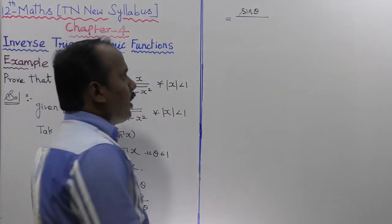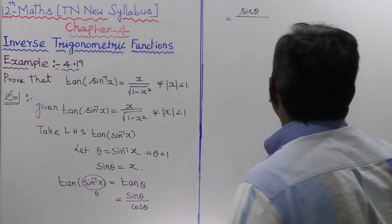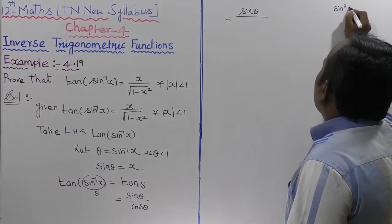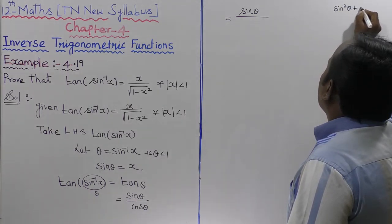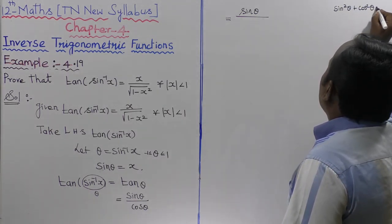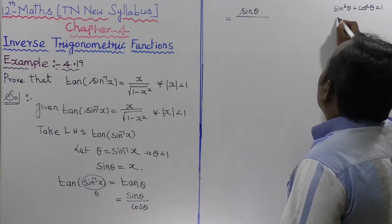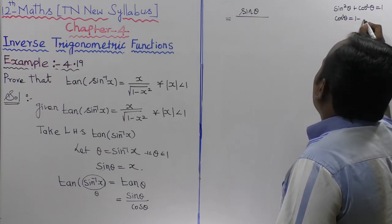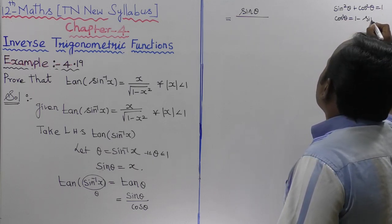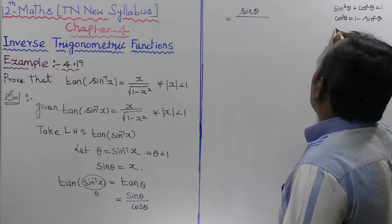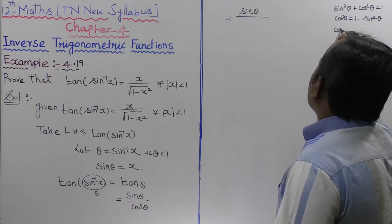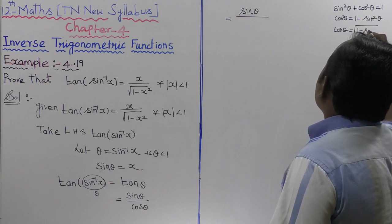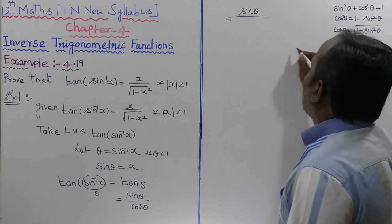Using the identity sin squared theta plus cos squared theta equals 1, we get cos squared theta equal to 1 minus sin squared theta. Therefore, cos theta is equal to root of 1 minus sin squared theta.